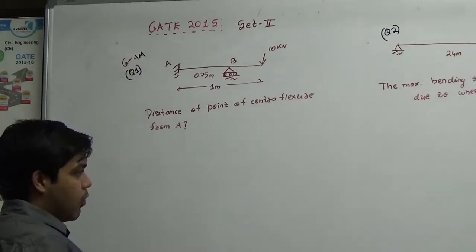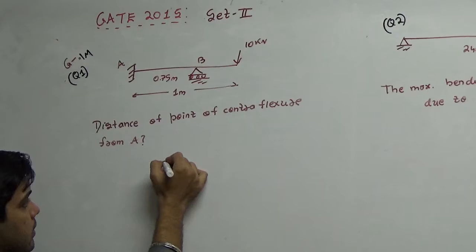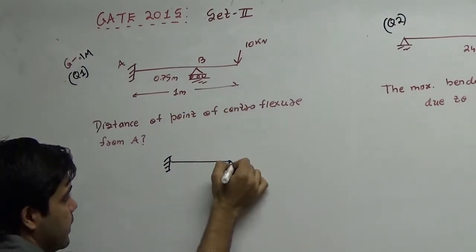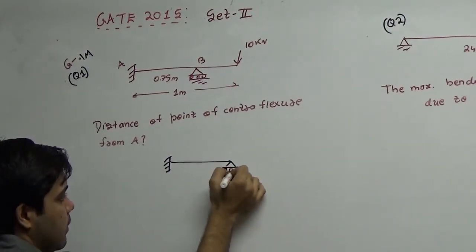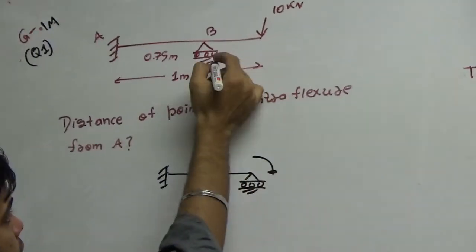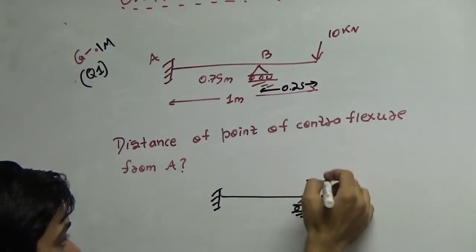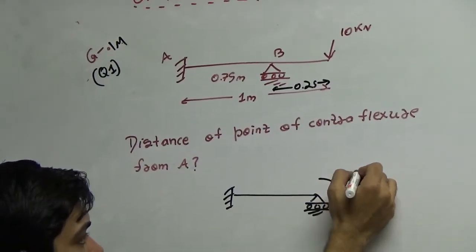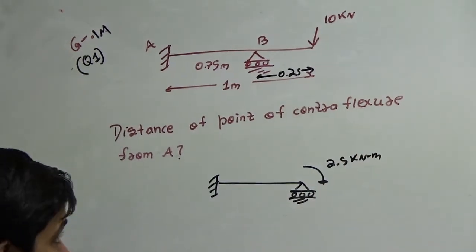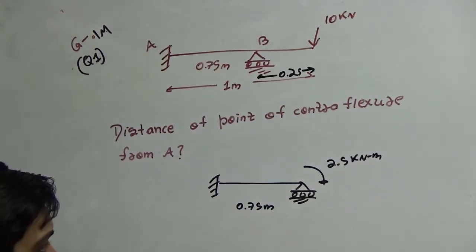It's a very simple problem — you only have to use basics. This problem can be simplified as a propped cantilever with a moment of 10 into 0.25, so this is 2.5 kilonewton meter, as the moment applied in a beam of 0.75 meter span.